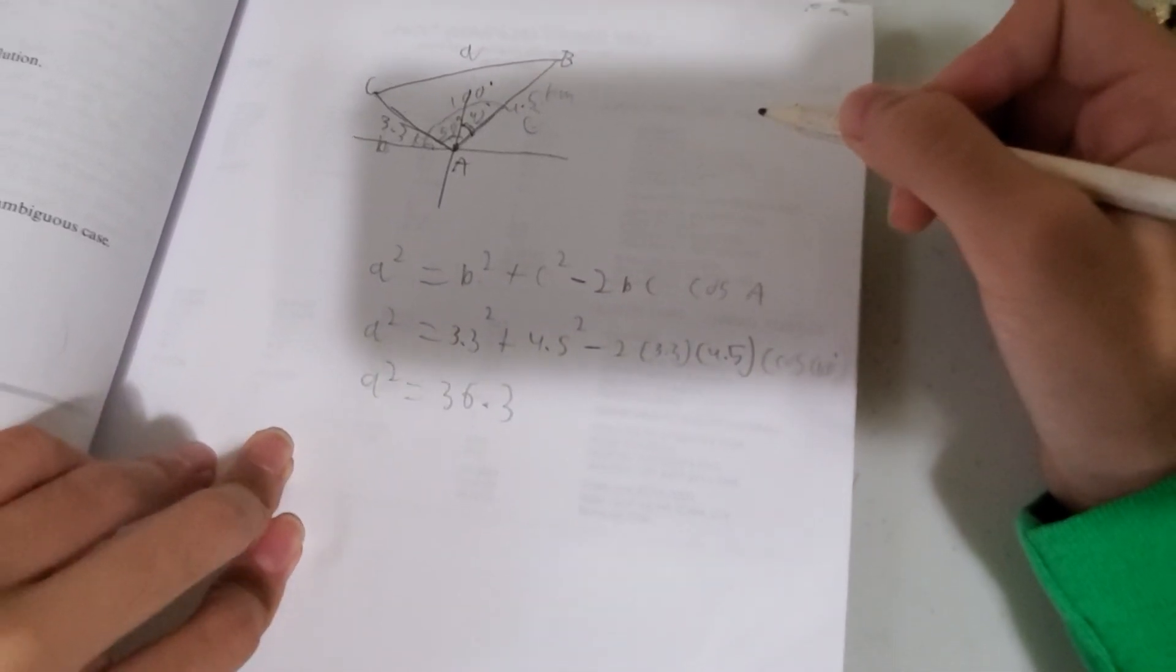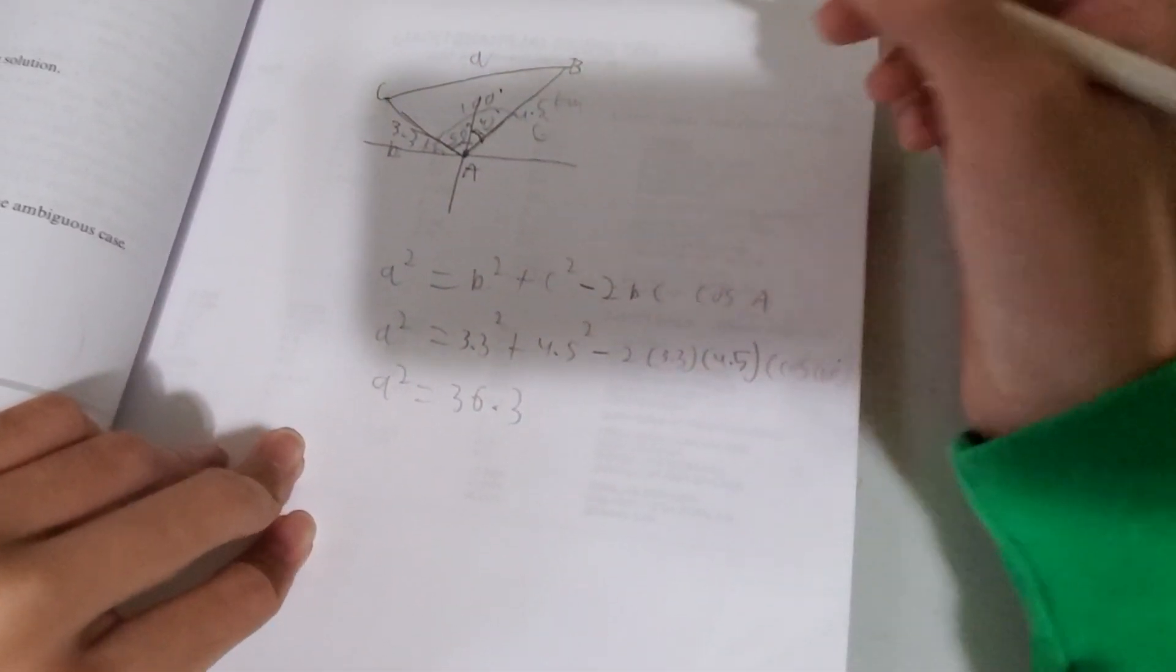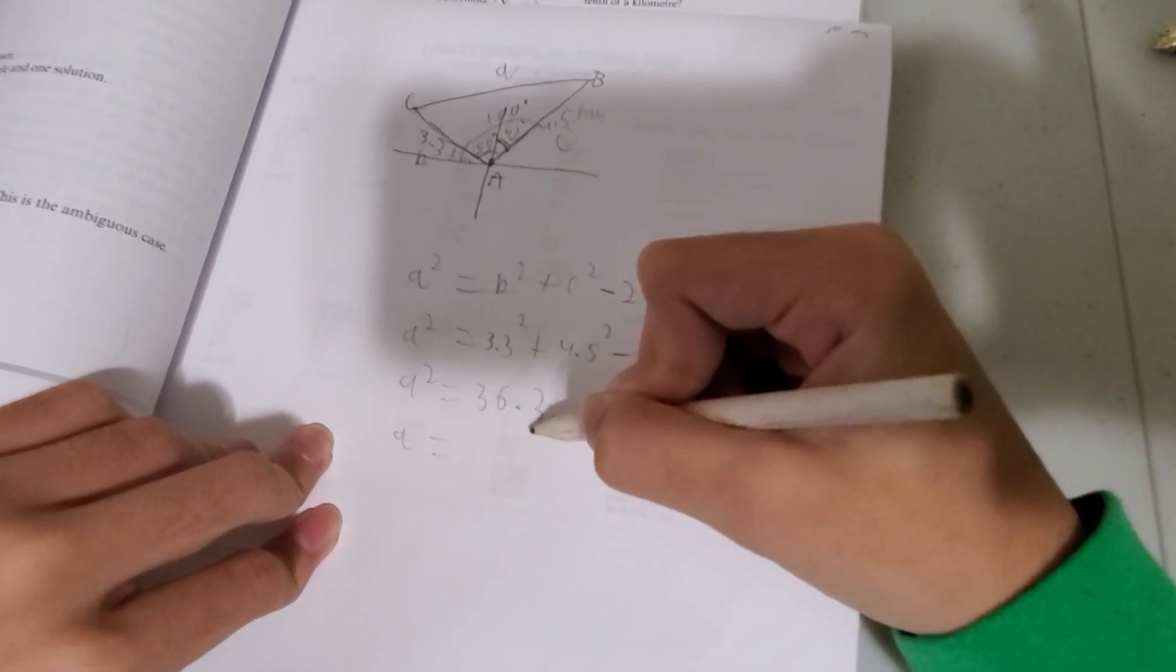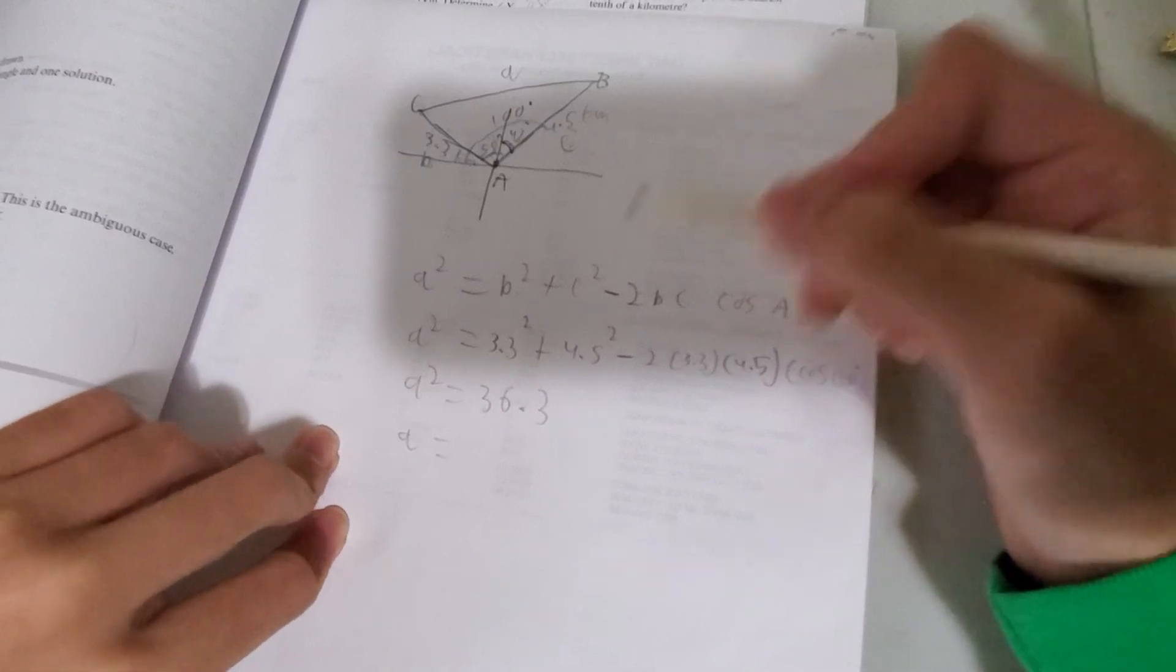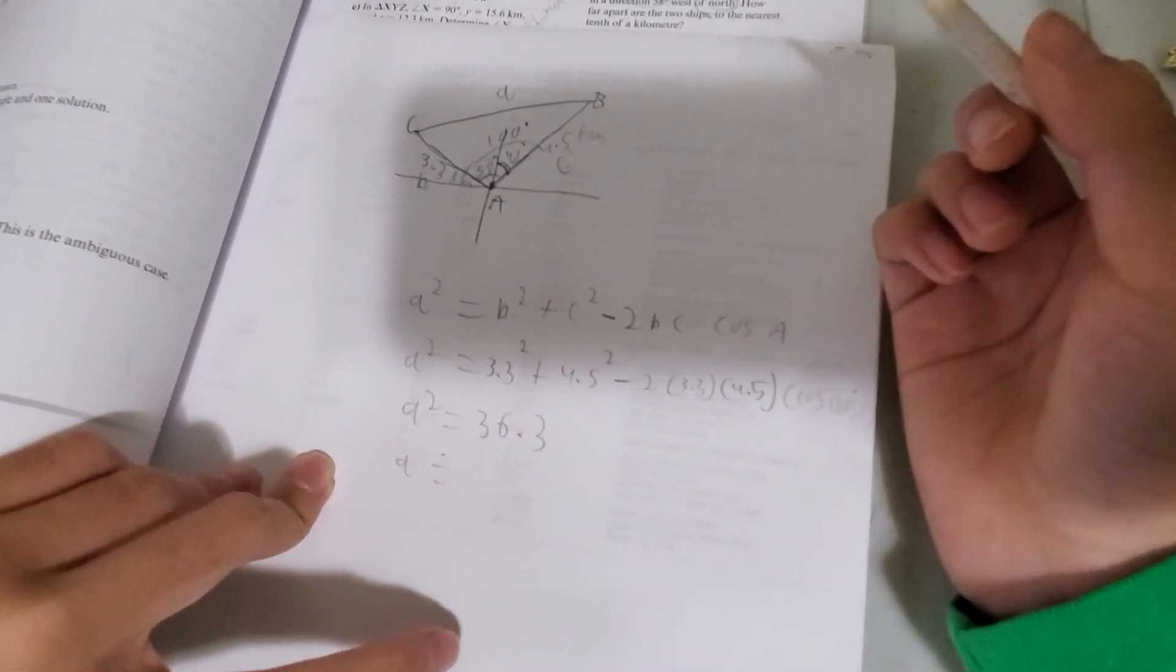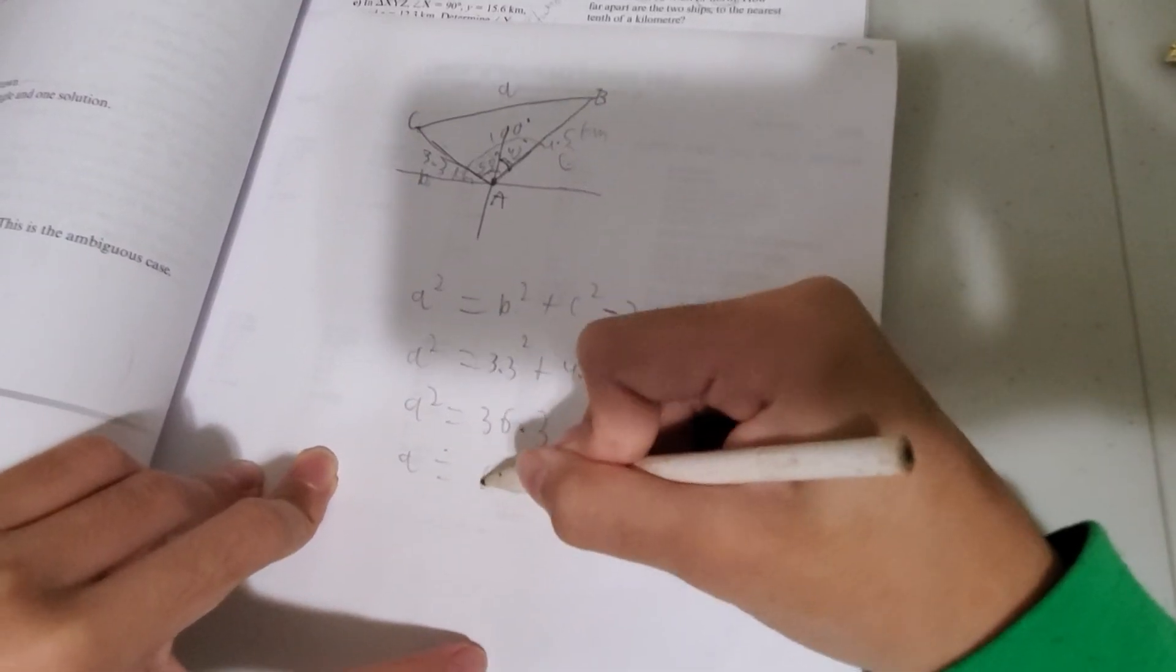We want to figure out the length of A, the distance in between the two ships. So A equals root of 36.3. Take the square root of 36.3, and you get approximately 6 kilometers.